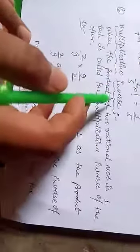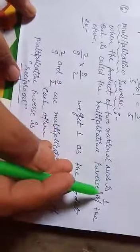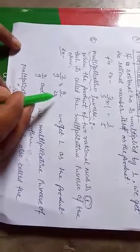Next, multiplicative inverse. When the product of two rational numbers is one, each is called the multiplicative inverse of the other.